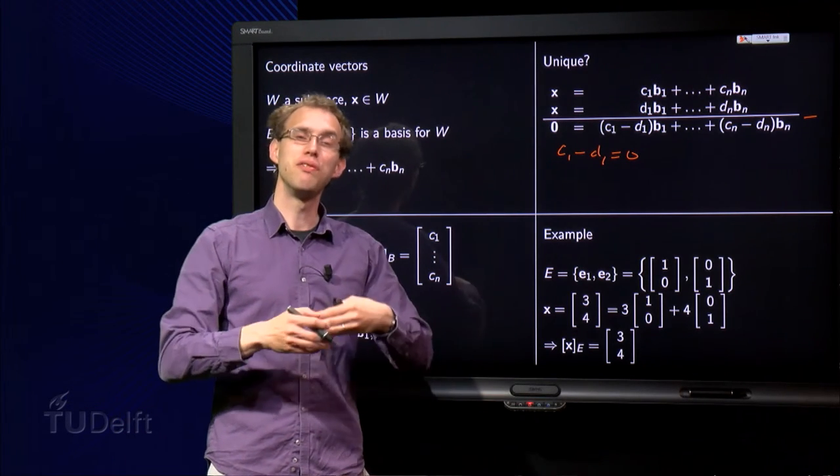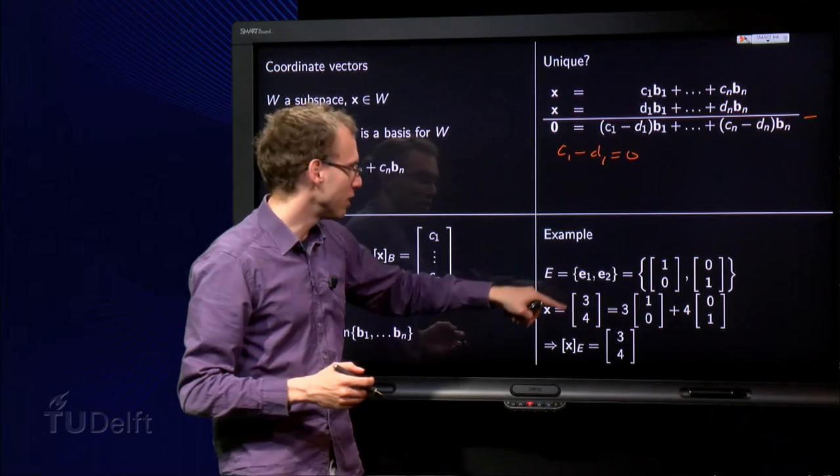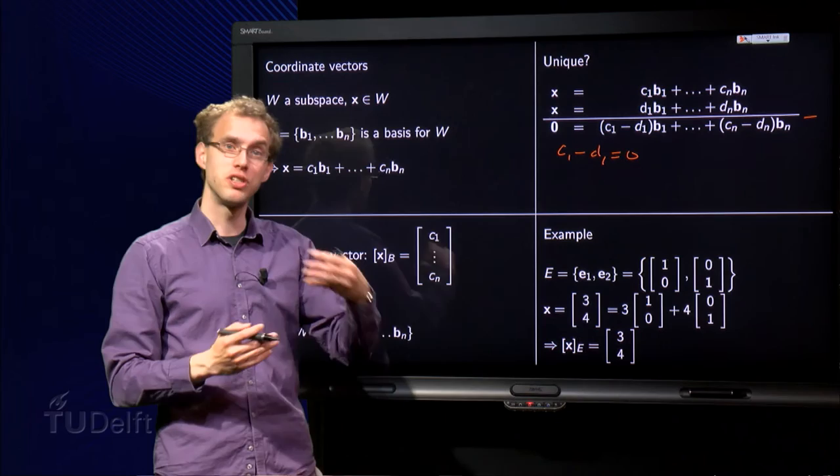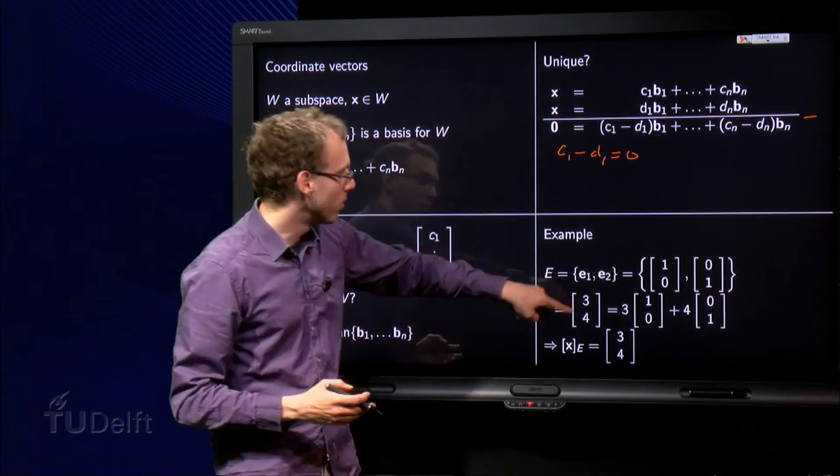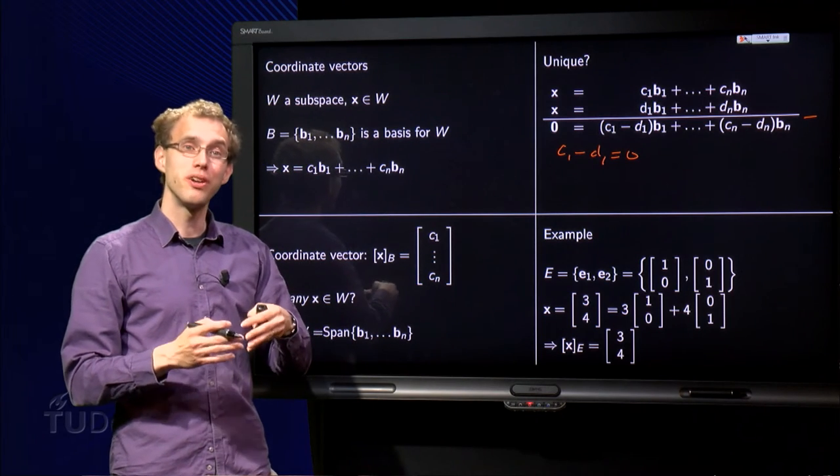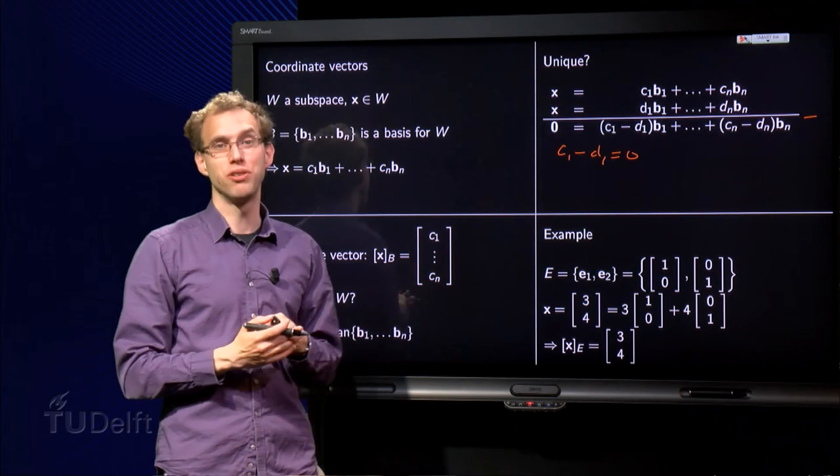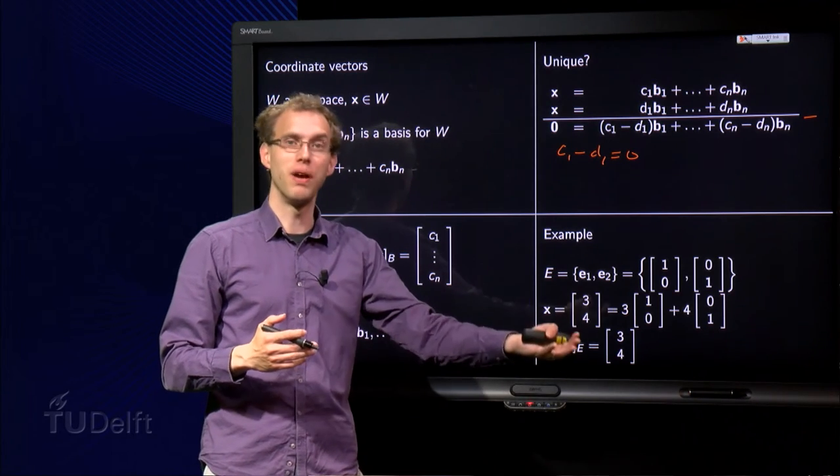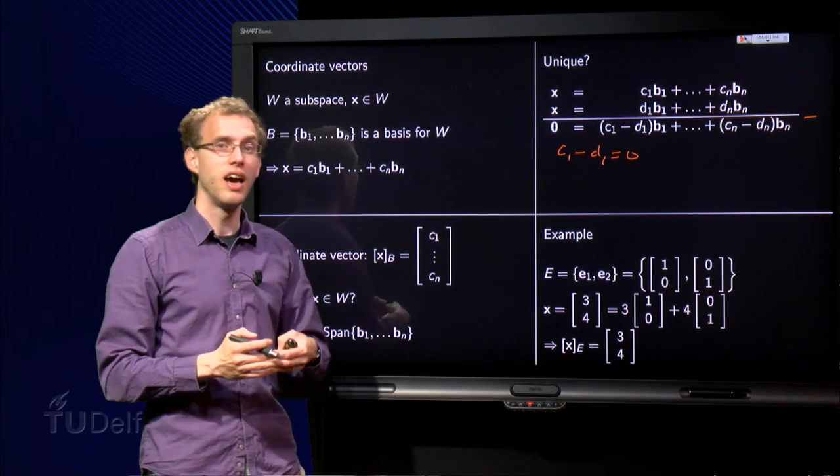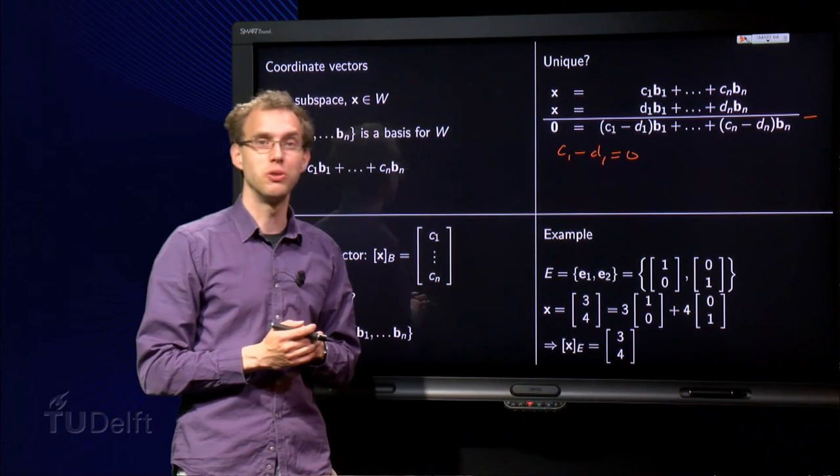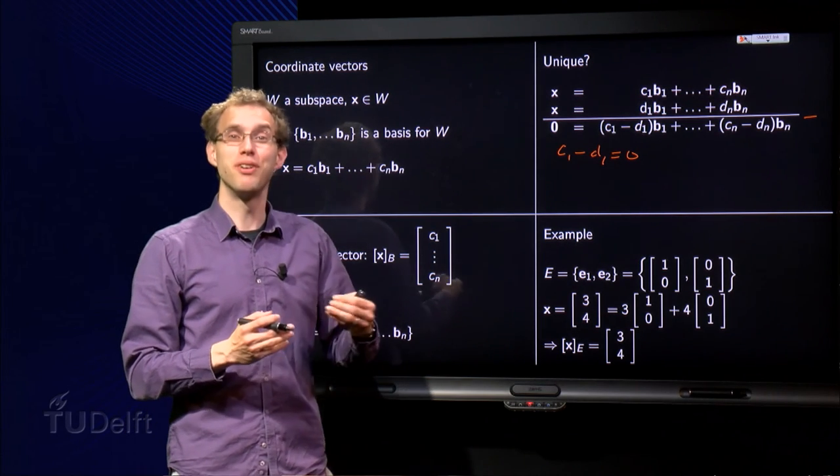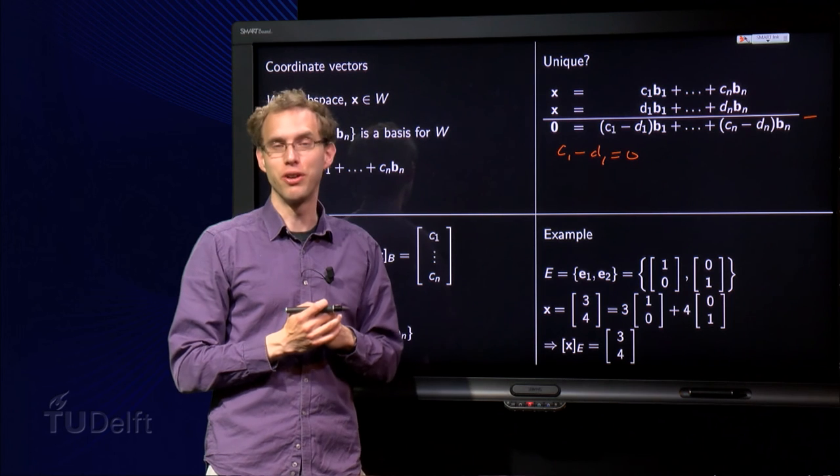But that is exactly as our original x was. So we see that if we take the standard basis, then the notion of a coordinate vector with respect to the standard basis corresponds to the notion of a coordinate vector we already had. So coordinate vectors are just a generalization of what we already knew for the standard basis. And if you have other bases, then you have to start to do computations. Of course, curious to see what happens if you have other bases - we will see that in another video.